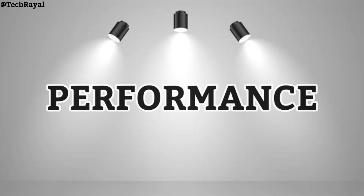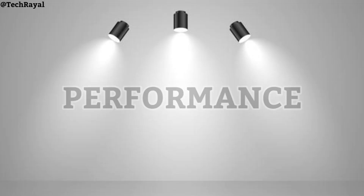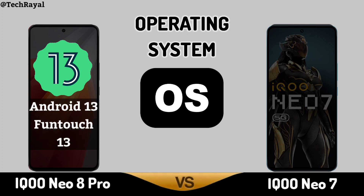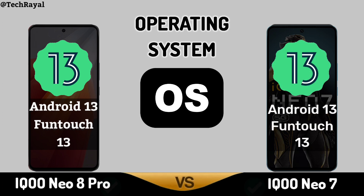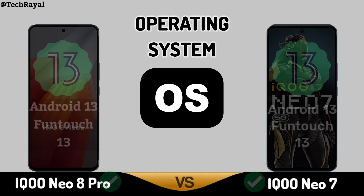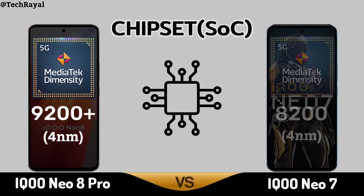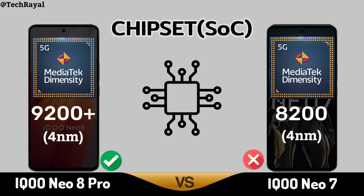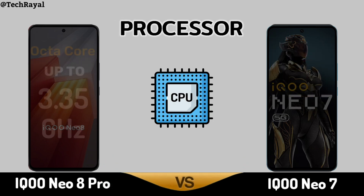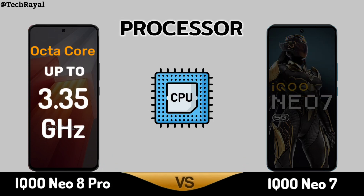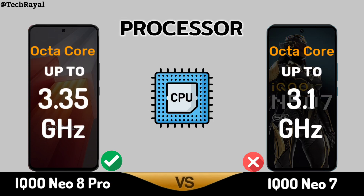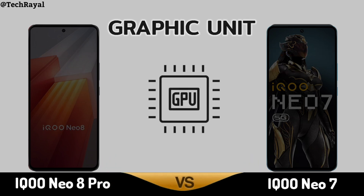Now, Core Performance. Operating System. Chipset. Processor. Graphic Unit.